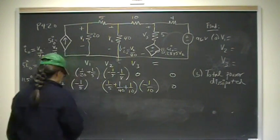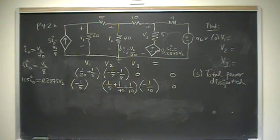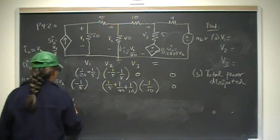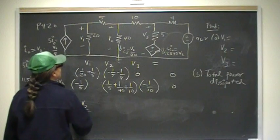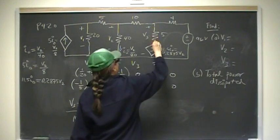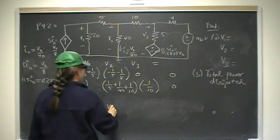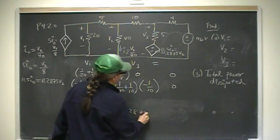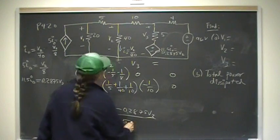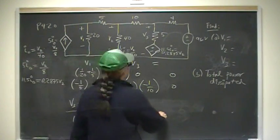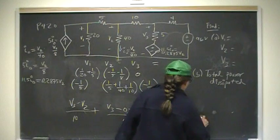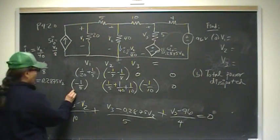I need a third equation, which I get by doing KCL at V3. It's going to be (V3 minus V2) over 10, plus the tricky branch current — V3 minus 0.2875 V2, which is what 11.5 I₀ is, over 5 — plus the last branch current (V3 minus 96) over 4. All those sum to zero.